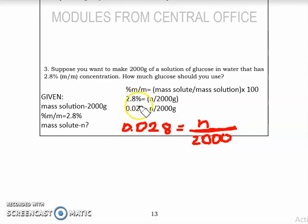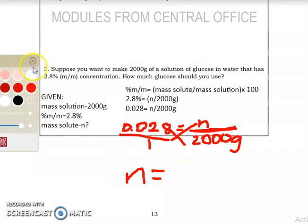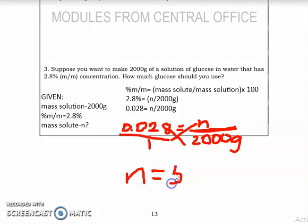Convert 2.8% to decimal. You may just divide 2.8 divided by 100. You will arrive at 0.028 equals N divided by 2,000 grams. This is understood to have a denominator of 1, so just cross multiply. Using our calculator, 0.028 times 2,000, the answer is 56 grams.